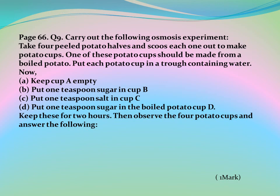Page 66, Question 9: Carry out the following osmosis experiment. Take four peeled potato halves and scoop each one out to make potato cups — one cup should be made from a boiled potato. Put each potato cup in a trough containing water. Keep cup A empty, put one teaspoon of sugar in cup B, put one teaspoon of salt in cup C, and put one teaspoon of sugar in the boiled potato cup D. Keep these for two hours, then observe the four potato cups and answer the following.